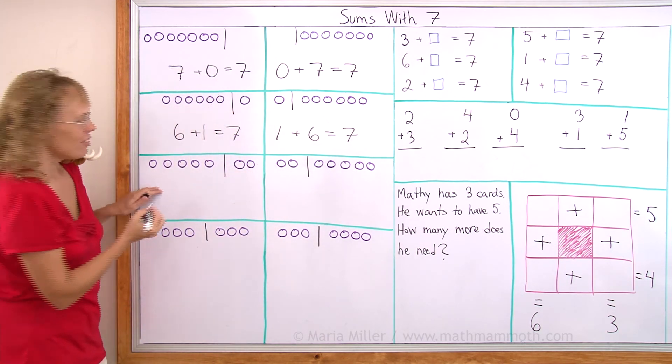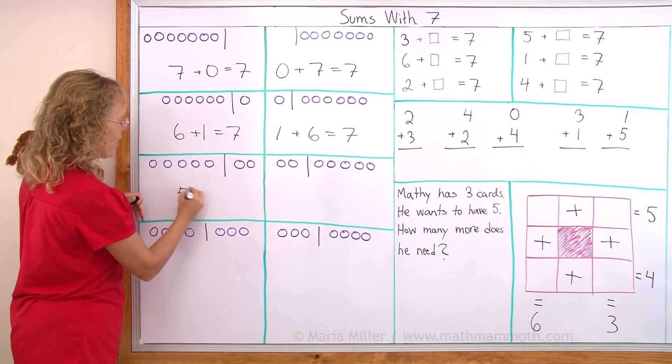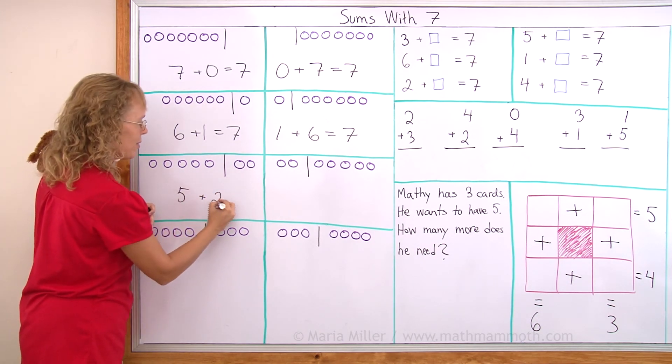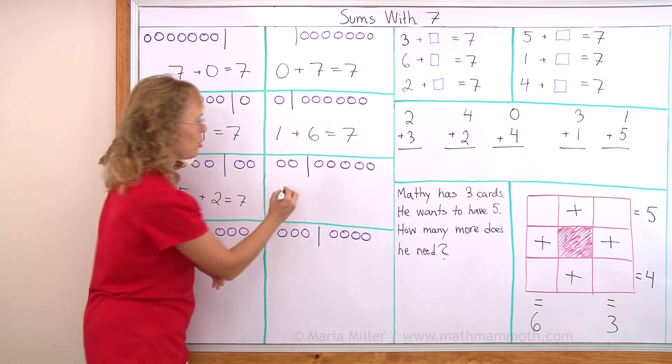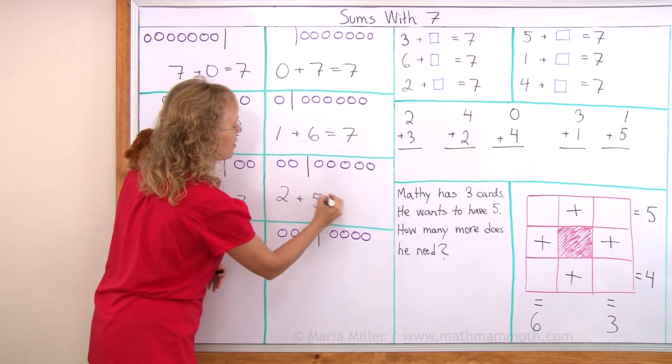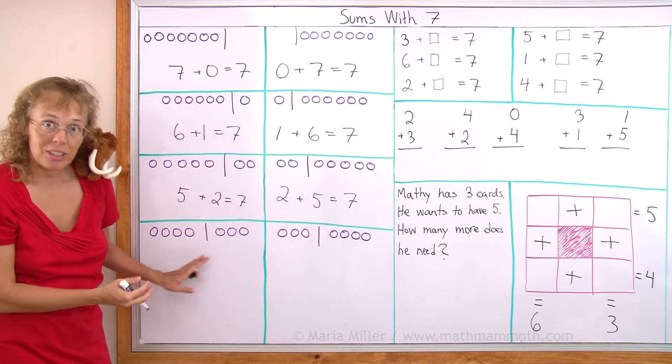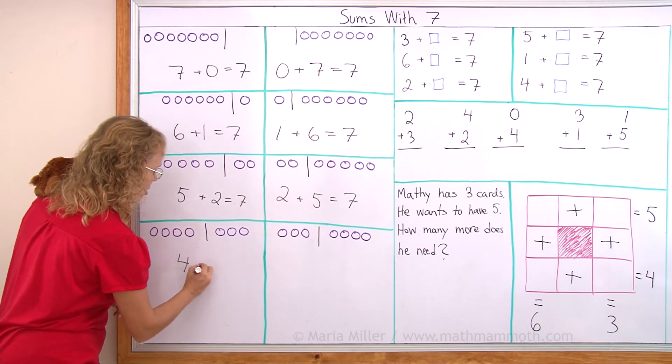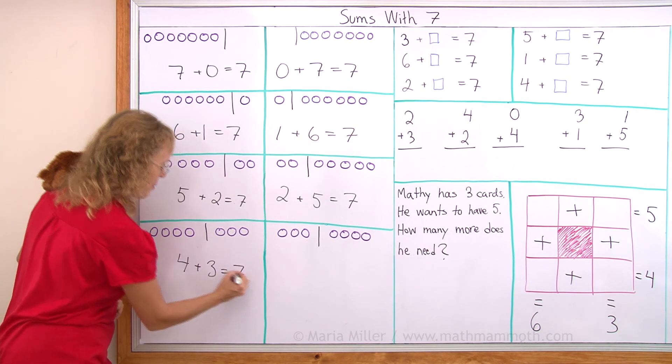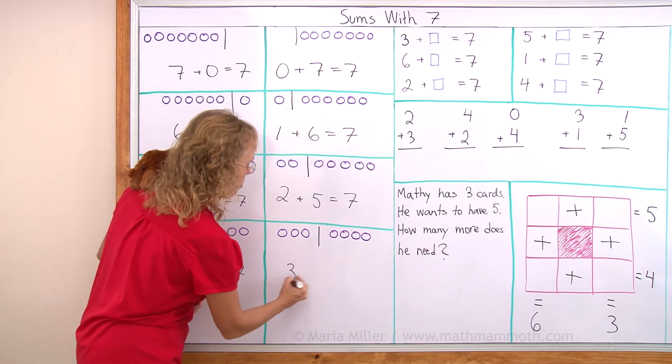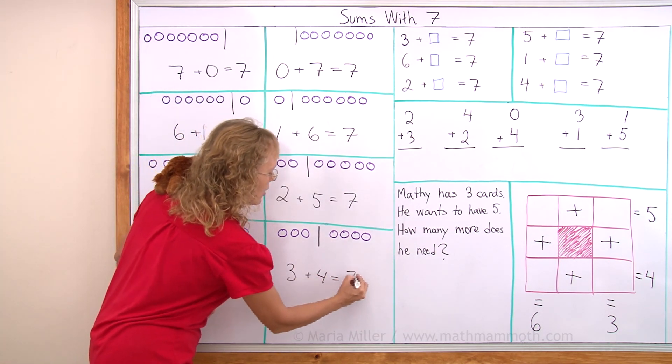Over here five here and two here makes seven, or the other way around two and five makes seven. And the last way is four and three. Four plus three equals seven, or three plus four equals seven.